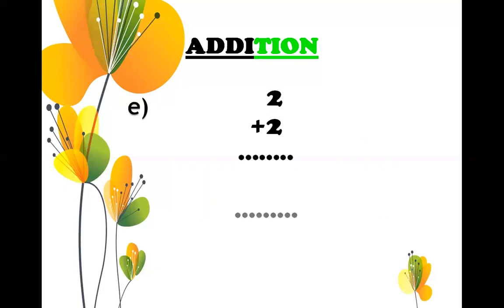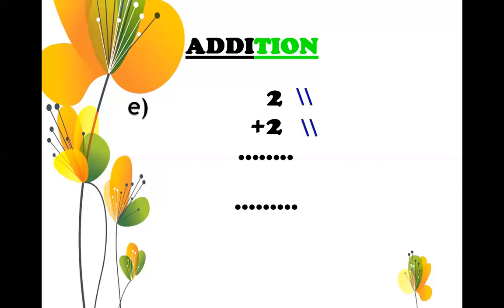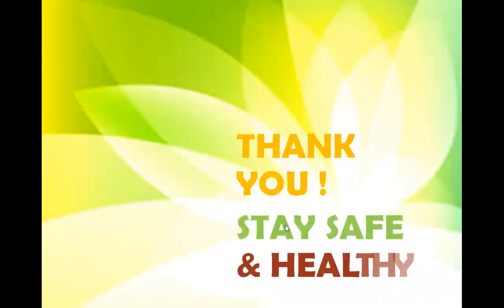Let's do one more: 2 plus 2. Draw two lines in front of number 2: one and two. Again you have to add two, so draw two more lines. Count how many lines are there: one, two, three, four. Four is the correct answer, please write four in the given space. That's all for today, thank you, stay safe, bye bye!